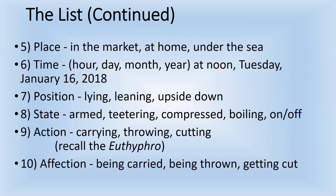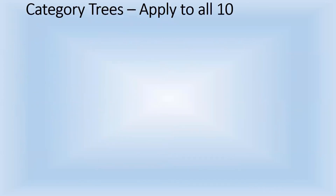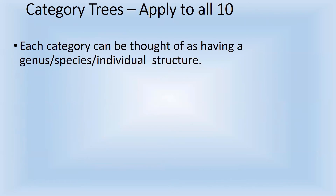A way to remember them is to start with P-Q-R-S-T, as logicians like to do — some letters have two, some don't. We have place and position for the P's, Q is quantity, R is relation, T is time, S is state and substance. Then there are two A's — action and affection — and they're a pair that goes together. Each of the categories has a tree of sorts, with a genus, a species, and an individual within any given category.